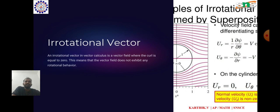What is an Irrotational Vector? An irrotational vector is a concept from Vector Calculus and Fluid Dynamics. In essence, it describes a vector field where the curl of the vector field is 0 at every point. In mathematical terms, for a vector field f, the curl denoted by del cross f is identically 0, then f is said to be irrotational.